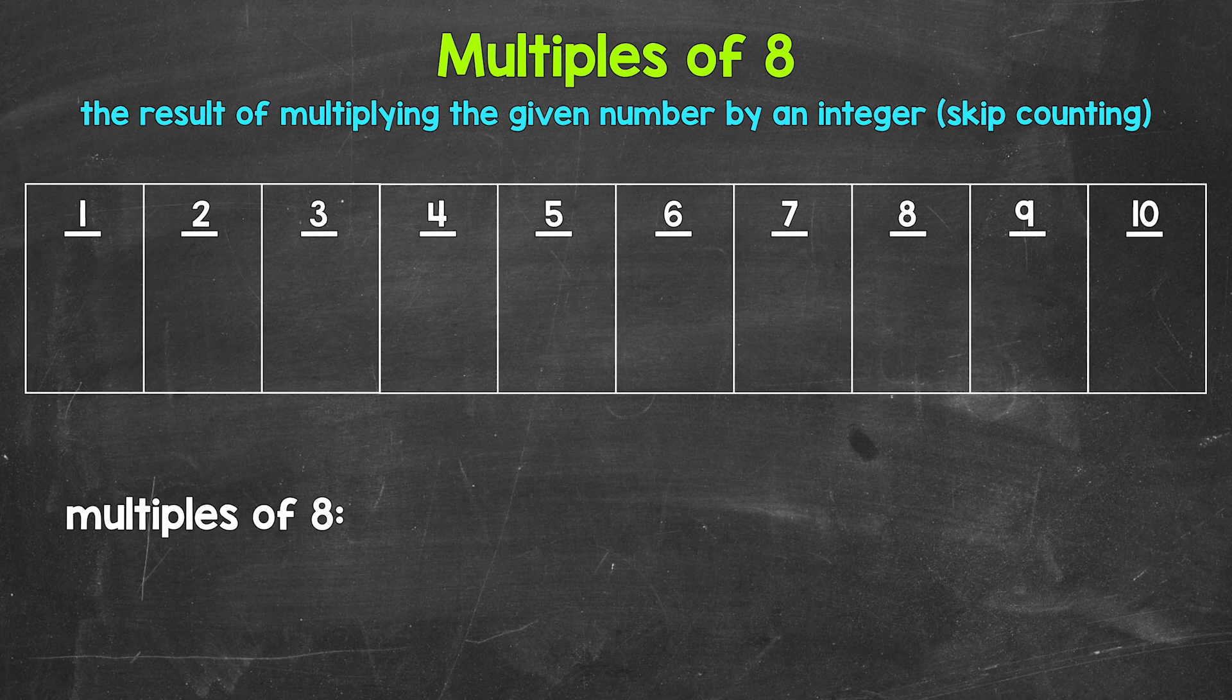So looking at the multiples of eight, let's start with one times eight. That gives us eight. Eight is the first multiple of eight. Then we have two times eight, that's 16. 16 is the second multiple of eight.